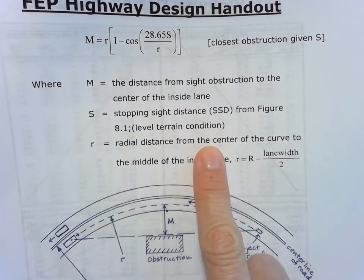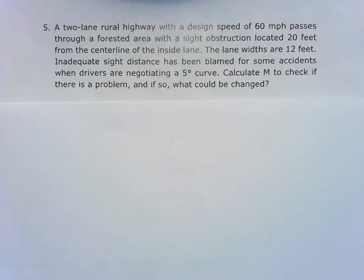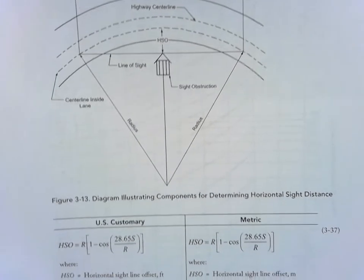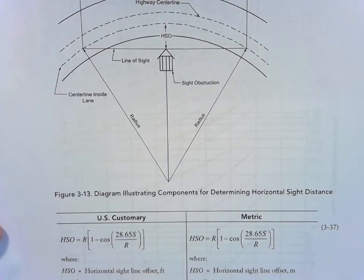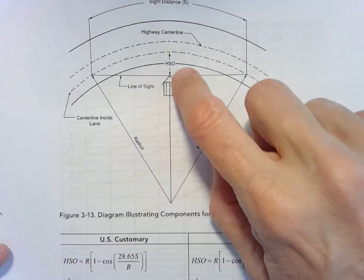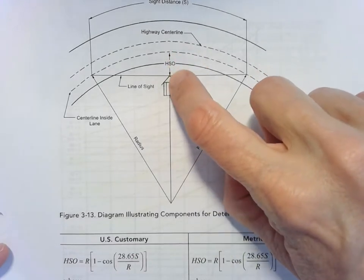In the 2018 AASHTO Green Book, that variable M is now called HSO, which is the horizontal site line offset, but if we look at our drawing here, it looks the same. It's from that center line to the edge there.